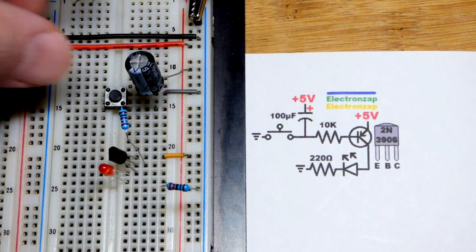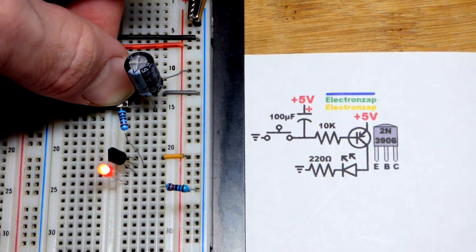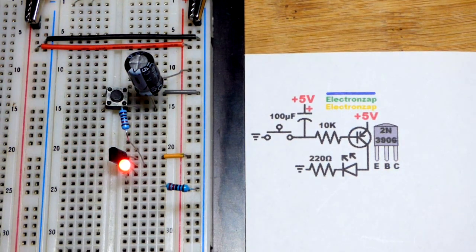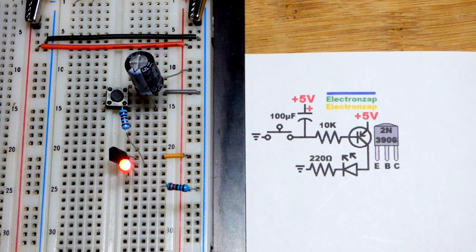In the last video, we looked at the NPN bipolar junction transistor that fades off an LED over time after you turn the switch off.